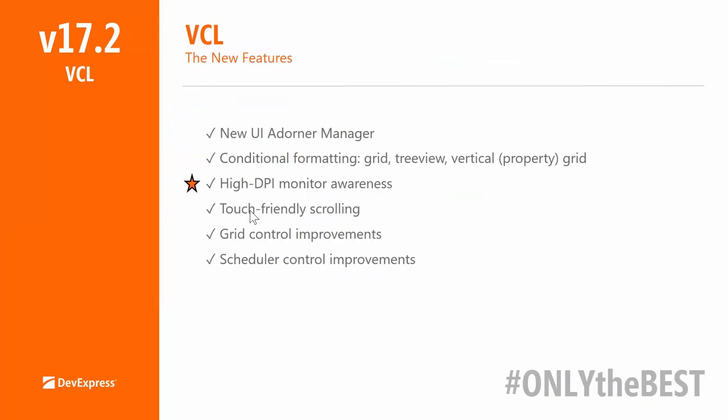Next up is yet more modernization of our VCL runtime: touch-friendly scrolling. If a control requires a scroll bar, it is not shown until the user hovers the mouse over the content. It is only shown as a shadow with a visible thumb that is correctly sized according to the content size. Better seen than described — we'll see that in a minute.